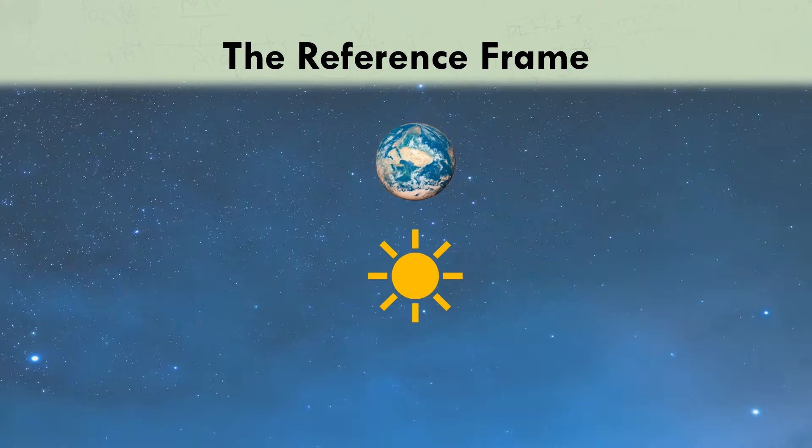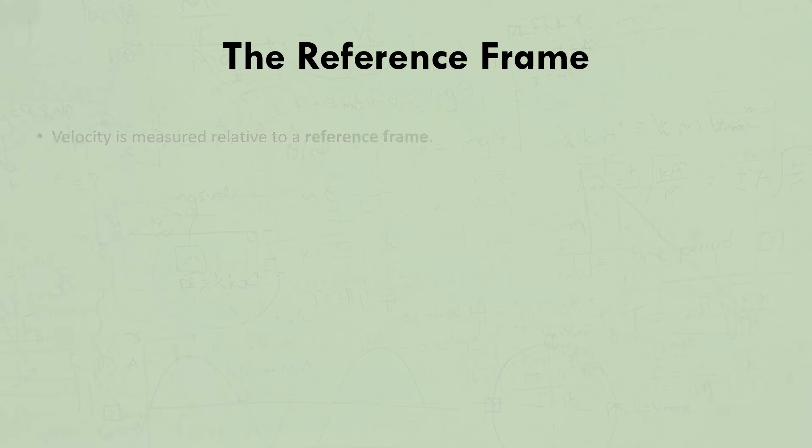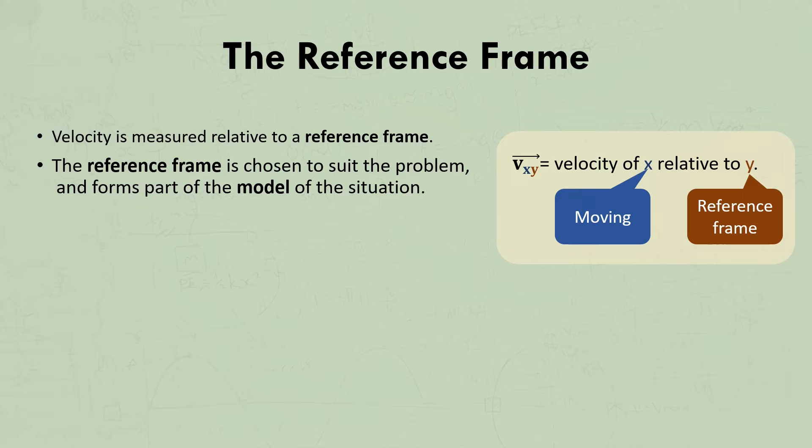But the ground isn't actually stationary. It's part of the Earth, which is orbiting the sun very fast, and that's orbiting the centre of the galaxy. But this doesn't matter. If we call it our reference frame, then we can measure everything else relative to that, whether the reference frame is moving or not. And we choose our reference frame in order to make our modeling as simple as possible.